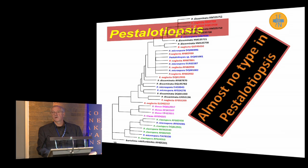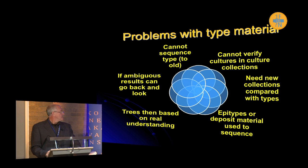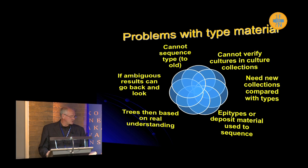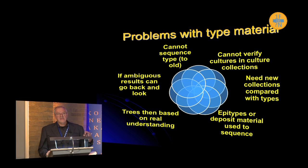Pesteloteopsis is a big problem because there are no type specimens in that genus. We cannot sequence the type because it's too old. Getting a strain from a culture collection doesn't help — students often say 'there's a strain in CBS that must be correctly identified,' but of course not. What we must do is get new collections, find them, compare them with the types, and then designate what's called an epitype. The epitype can be sequenced for molecular phylogenetic analysis and is there for future people to study.